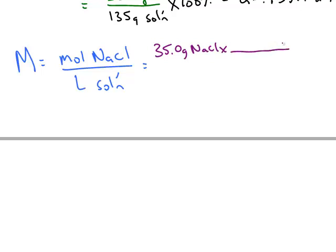And remember your conversion factors. Grams to moles comes from the molar mass, so you use the periodic table to convert grams into moles. Sodium chloride is 58.44 grams per mole.